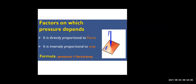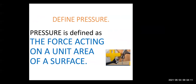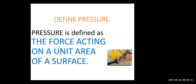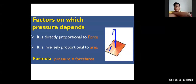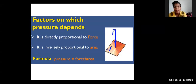So children, what is pressure? Pressure is force acting on unit area. Force upon area is your pressure — that is the formula. On what factors does pressure depend? Pressure depends upon two factors. First, it depends upon force — that is, it is directly proportional to force. And second, it depends upon area — that is, it is inversely proportional to area.